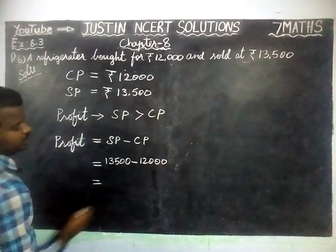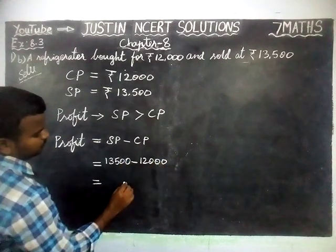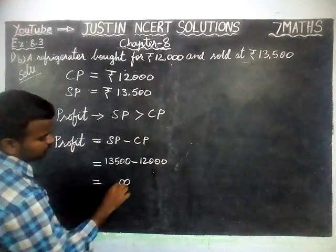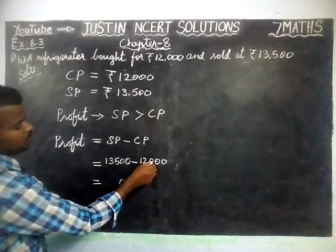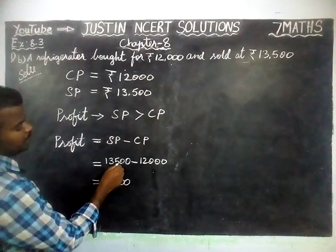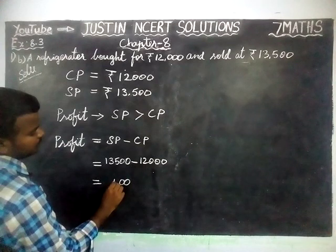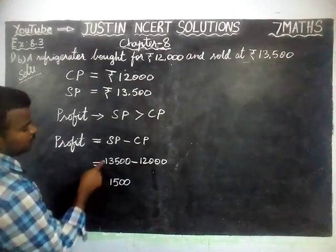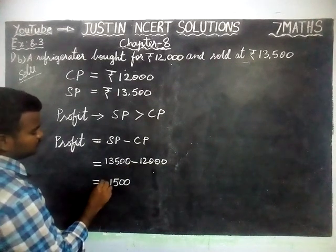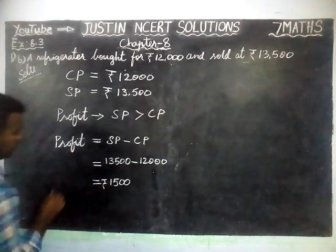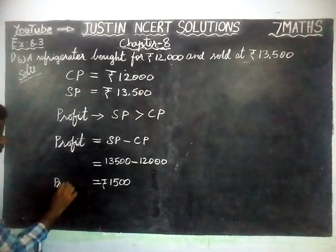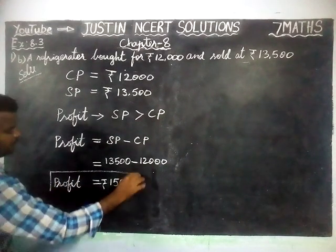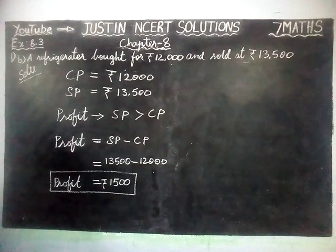Calculating: 13,500 minus 12,000. Here 5 minus 0 equals 5, 3 minus 2 equals 1, and 1 minus 1 equals 0. So the profit amount is Rs. 1,500.